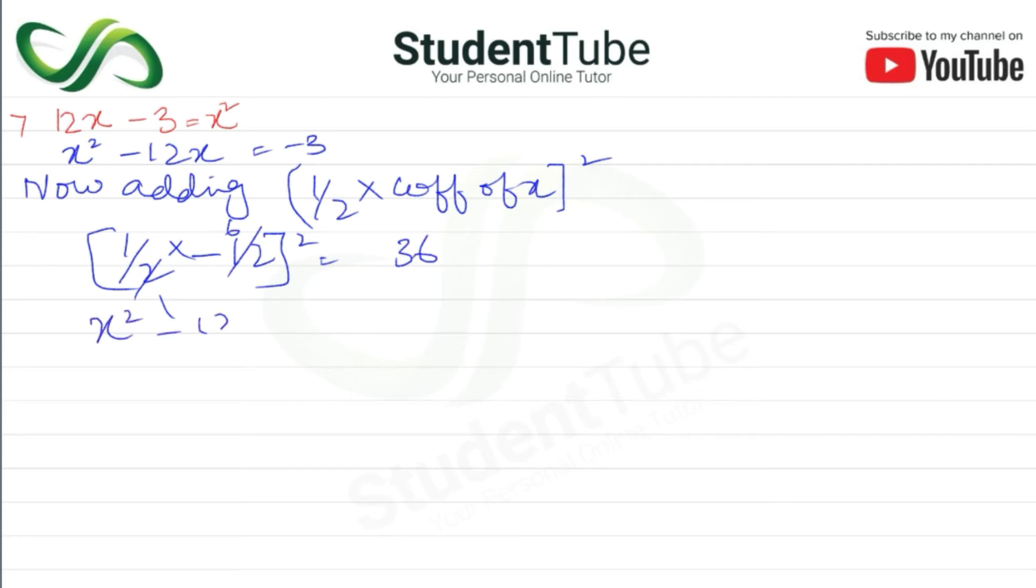x² - 12x + 36 = -3 + 36. This simplifies to (x - 6)² = 33.